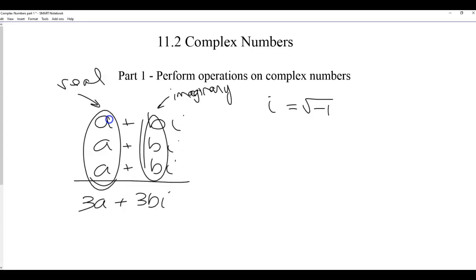Multiplying is just like we always do with binomials - we distribute properly. The only difference is when we get i squared, we simplify that to be negative one. Because i is the square root of negative one, i squared equals negative one.